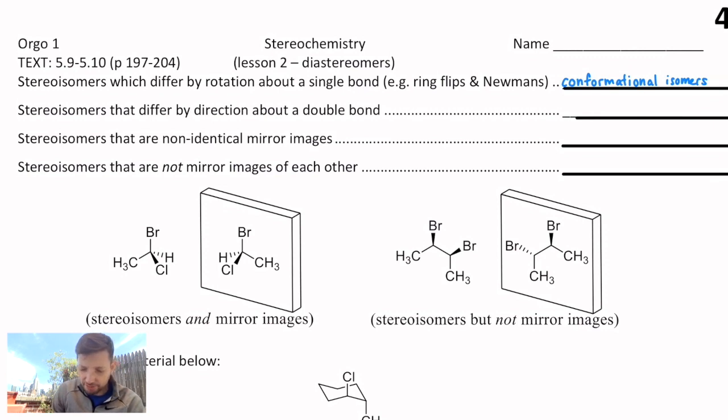When we're talking about direction about a double bond, alkene isomers, we call those geometric isomers, things like cis versus trans alkenes.